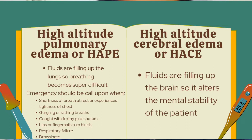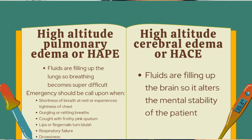HACE is the buildup of fluid in the brain, causing swelling and changes in the person's mental state. If a person with HAPE exhibits the following, emergency treatment should be sought: shortness of breath even at rest, tightness in the chest, gurgling or rattling breath, cough with frothy pink sputum, lips or fingernails turning bluish, respiratory failure, and drowsiness.